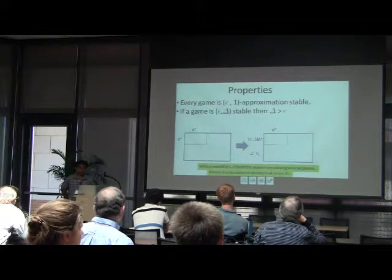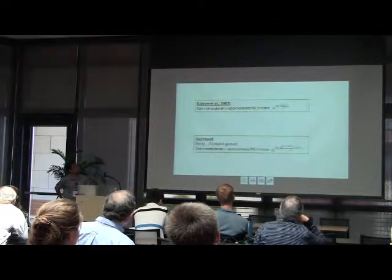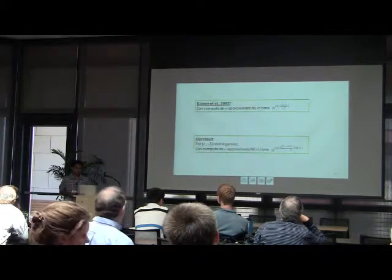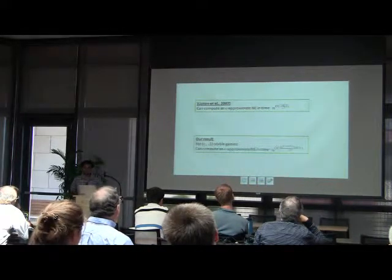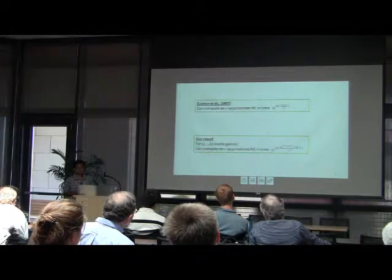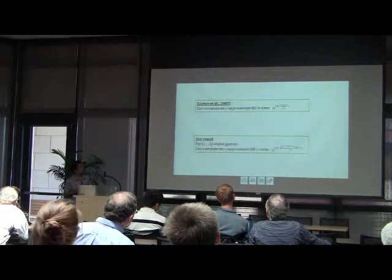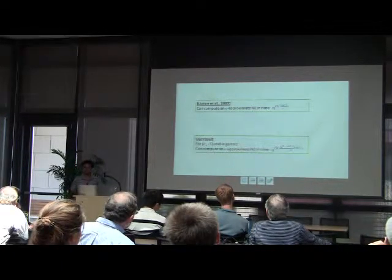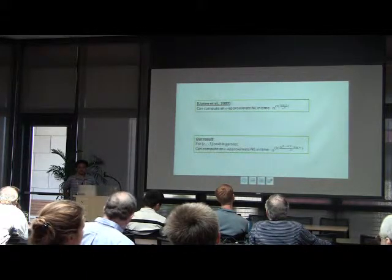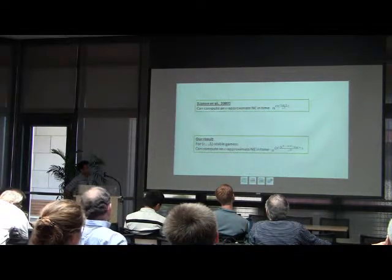We have two main results for stable games. The first is a generalization of the result of Lipton et al. from 2007, which showed that for any two-player n-action game you can compute an epsilon approximate Nash equilibrium in time n to the power log n over epsilon squared. We have a similar result: if a game is epsilon-delta stable, you can compute an epsilon approximate Nash equilibrium in time roughly n to the power (delta squared over epsilon squared) times log n. If delta equals one you recover the original Lipton et al. result, and as the game becomes more and more stable you get savings in the exponent.